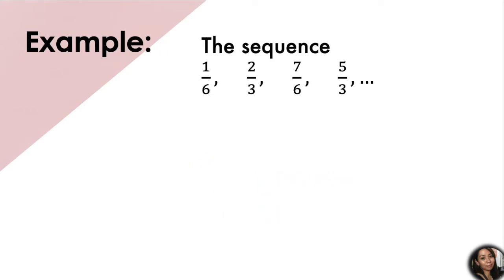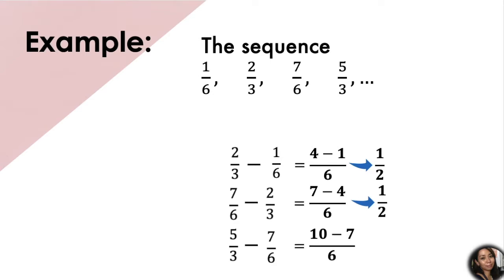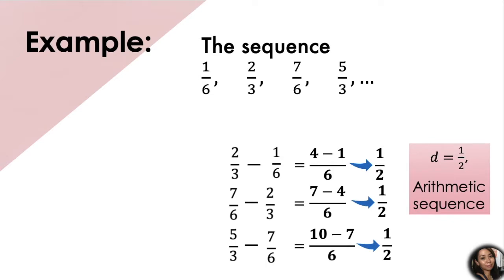But we could also try to check if this is an arithmetic sequence. Remember that we have to subtract any two consecutive terms. 2 thirds minus 1 sixth — we need to make the fractions similar before we proceed to subtraction. We now have 1 half. And 5 thirds minus 7 sixth is also equal to 1 half. Since we have a common difference equal to 1 half, then this sequence is an arithmetic sequence.